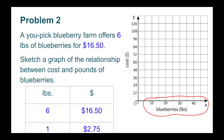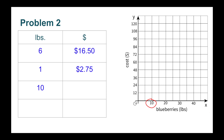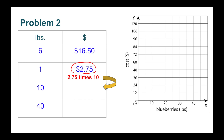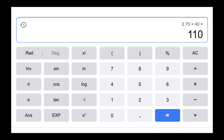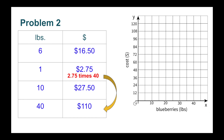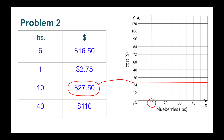The pounds for blueberries — 0, 10, 20, 30, 40 — doesn't jive very well with the pounds that I have in my table, so I'm going to need to change my table a bit. 10 pounds of blueberries and 40 pounds of blueberries. 1 pound times 10 equals 10 pounds. Since I multiplied the pounds times 10, I need to multiply the dollars times 10. So $2.75 times 10 equals $27.50. 1 pound times 40 equals 40. Since I multiplied the pounds by 40, I need to multiply the dollars by 40. So $2.75 times 40 equals $110.